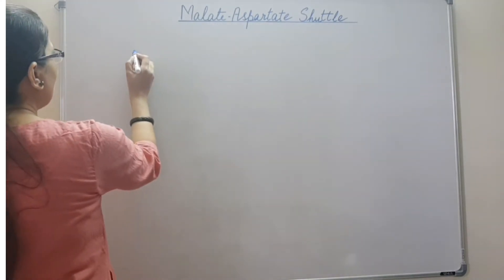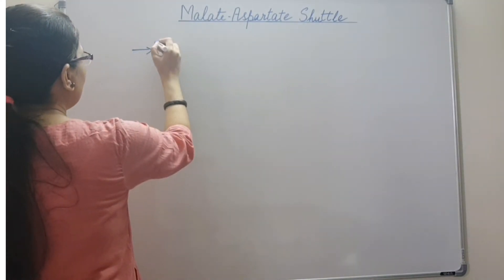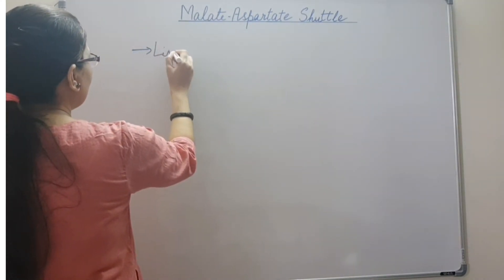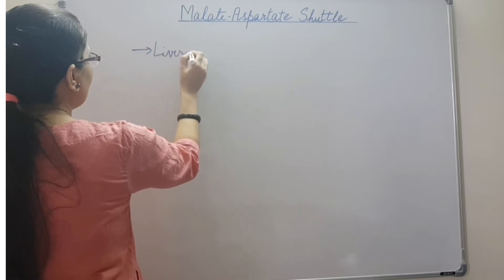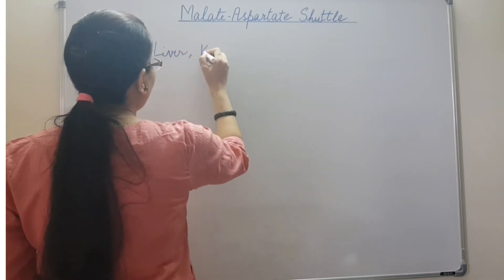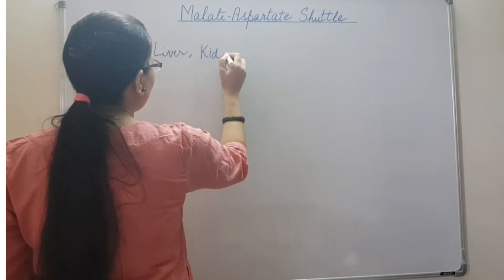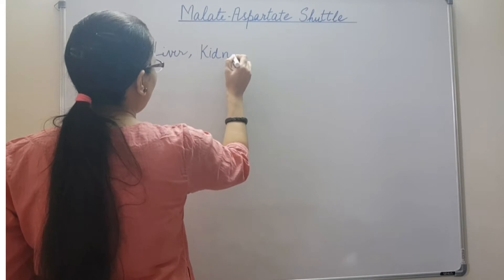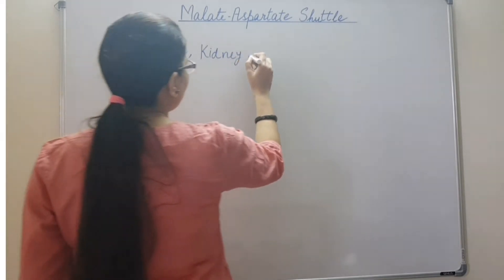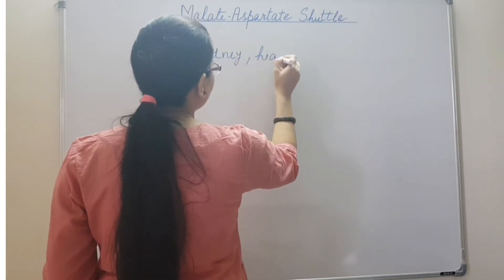The malate-aspartate shuttle takes place in liver cells, kidney cells, and heart cells.